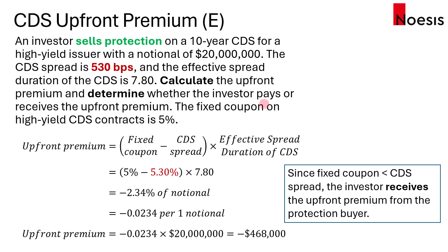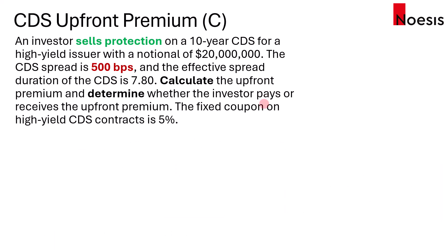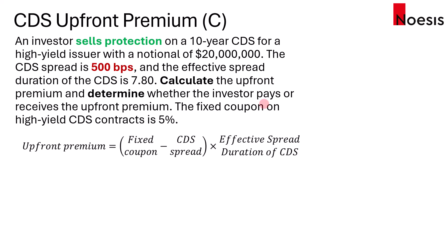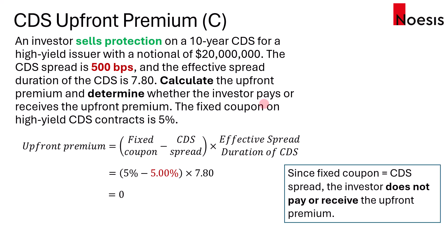In the last example, if the CDS spread is 500 basis points or 5%, which is the same as the fixed coupon, then the upfront premium will be zero. In this case, the protection seller or investor will not be receiving or paying the upfront premium.